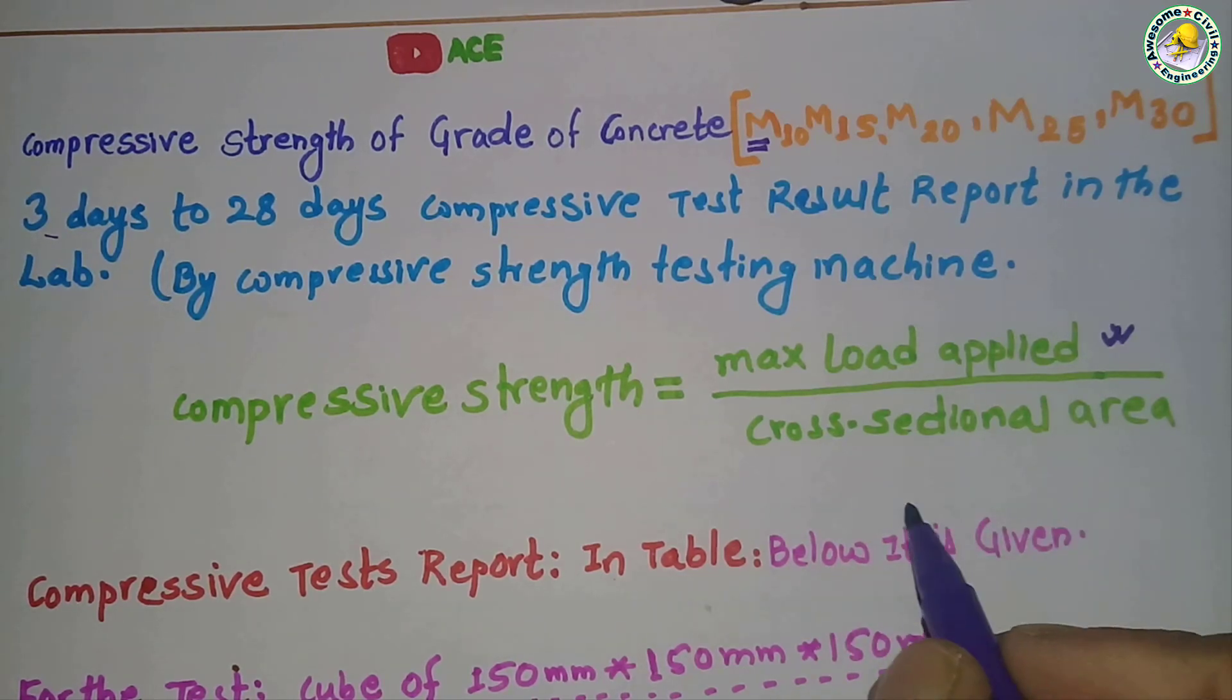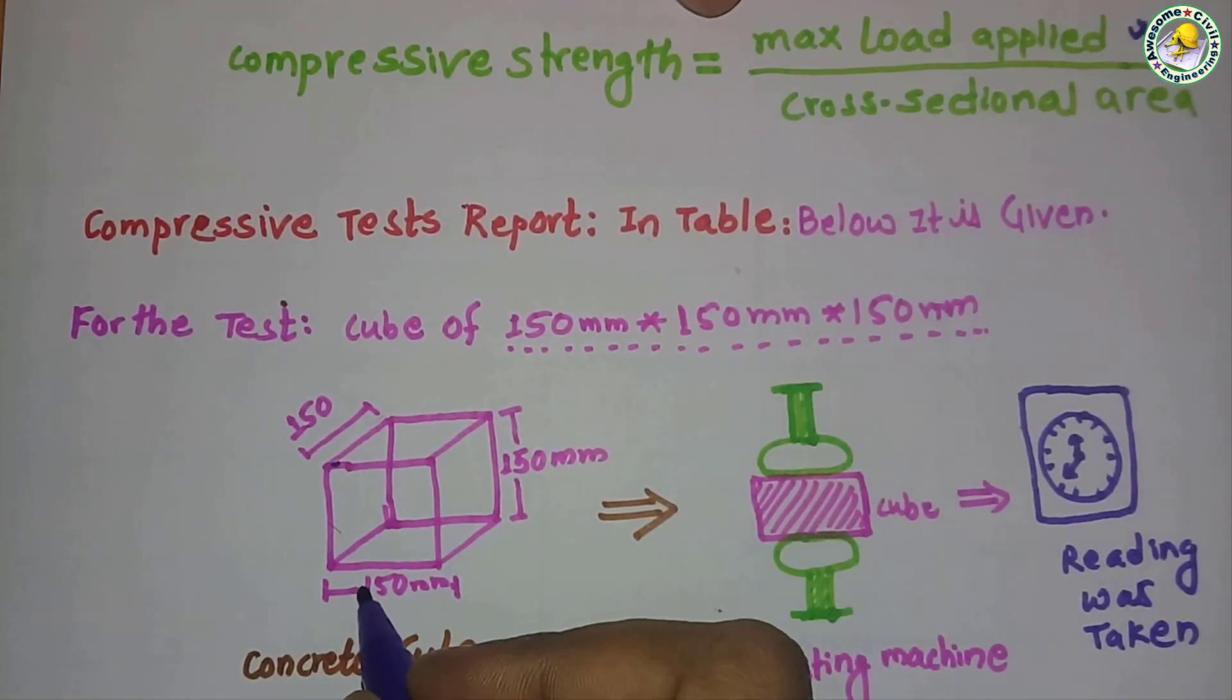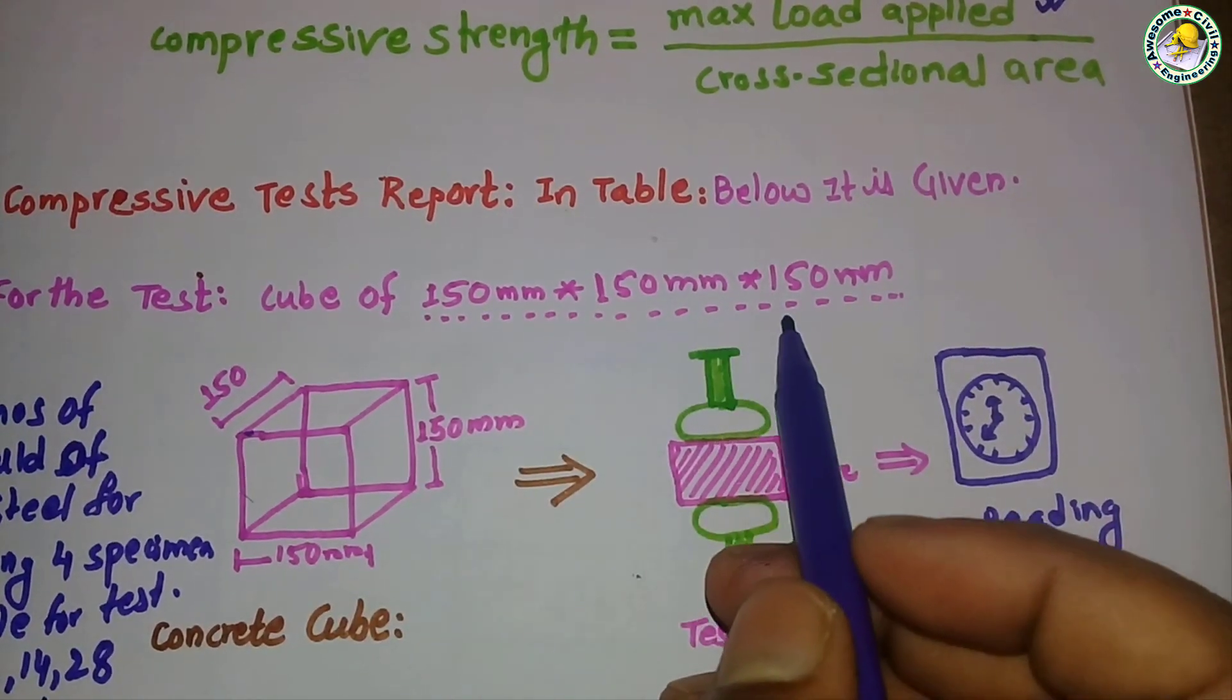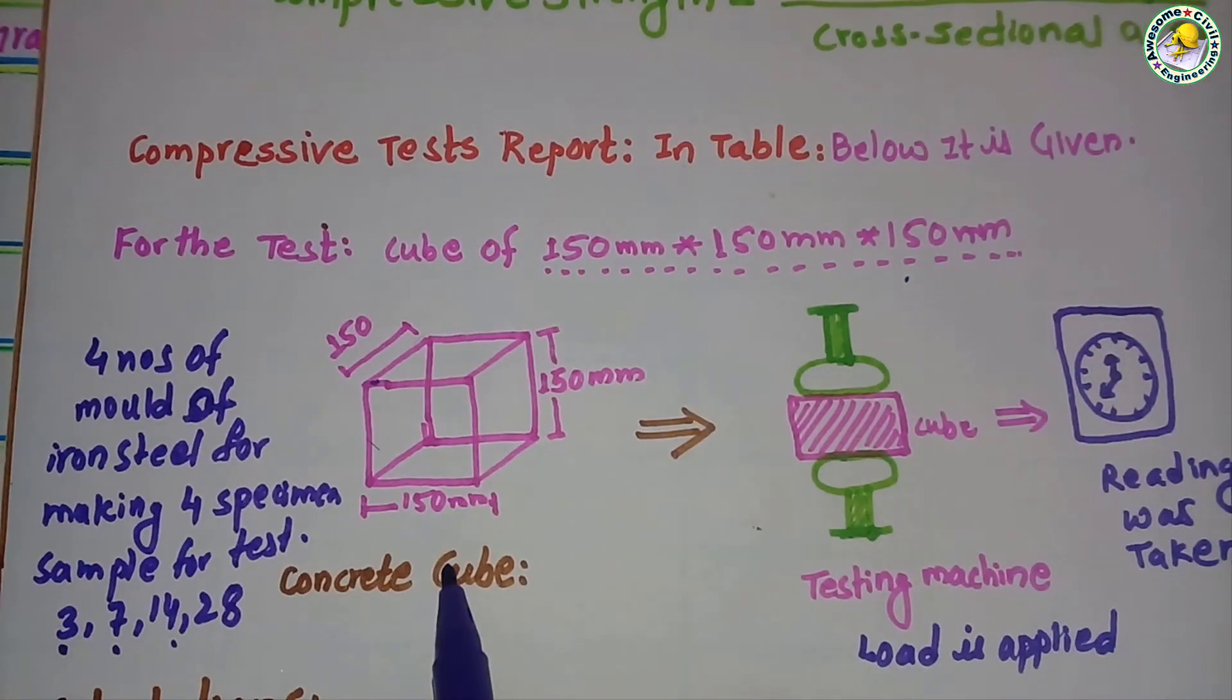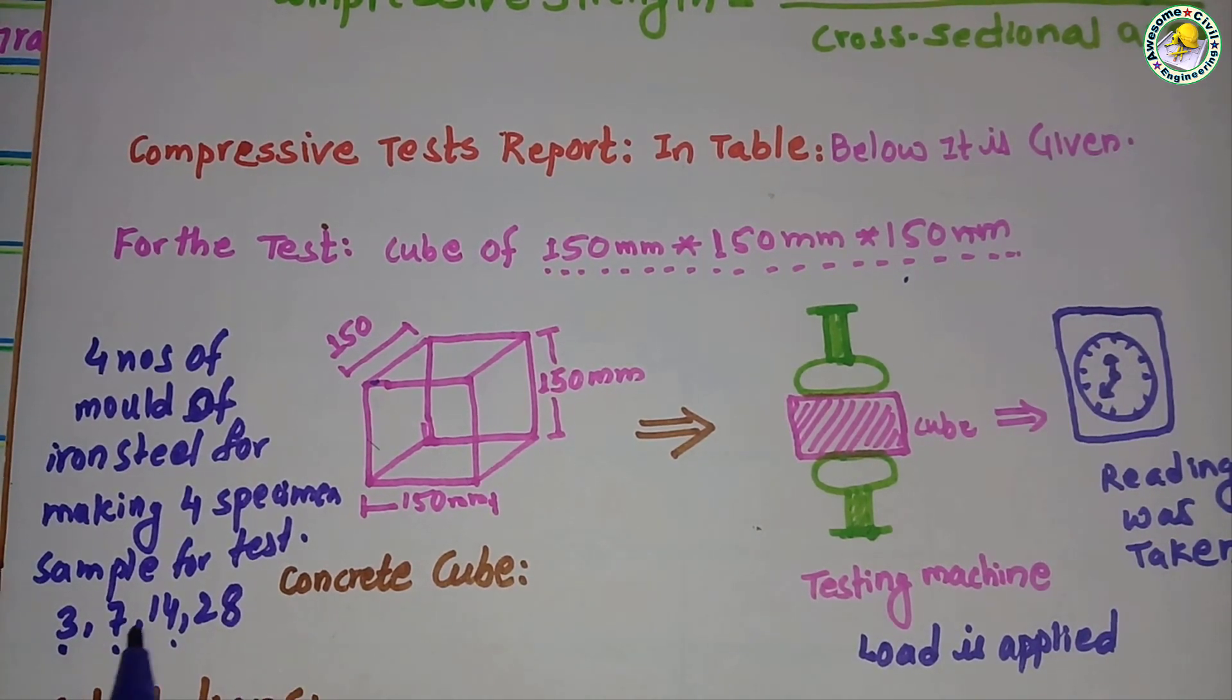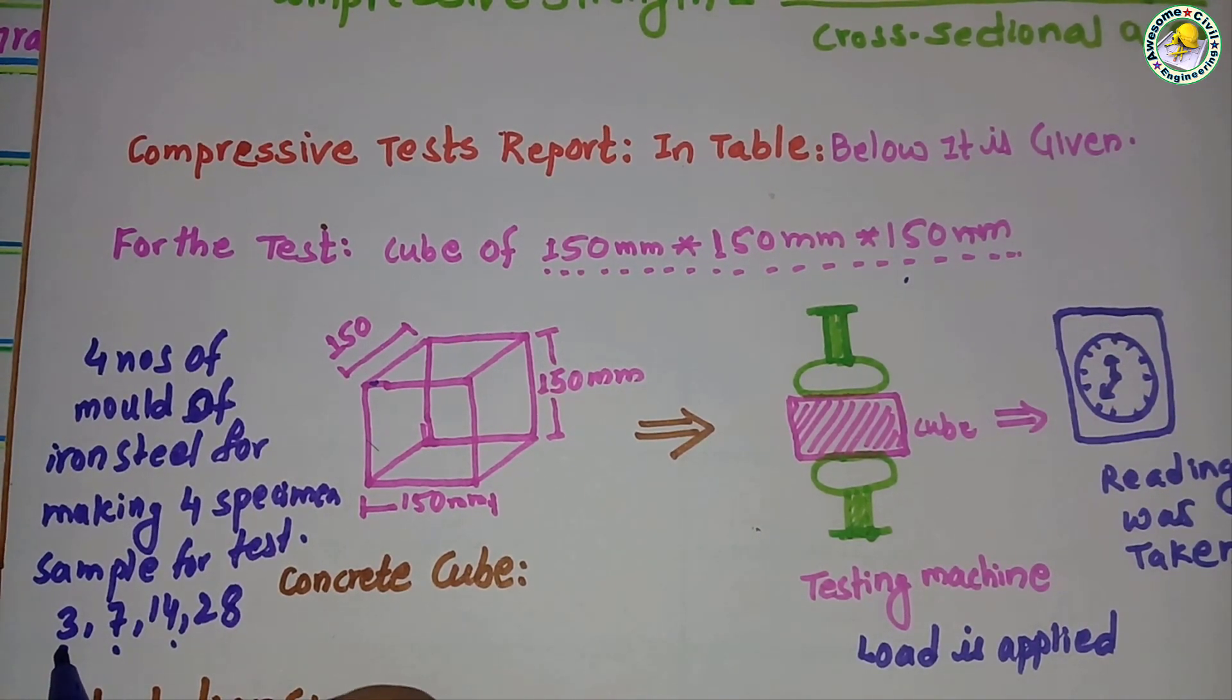For this test, first of all, a steel mold which is 150mm × 150mm × 150mm cube is taken. Four different number of molds are taken for four different number of tests, and the samples are prepared for testing.